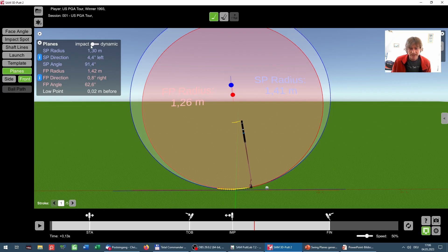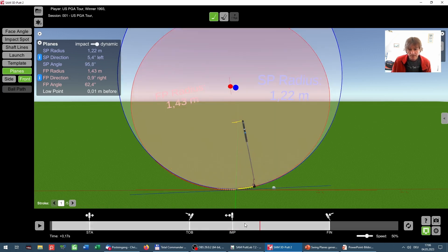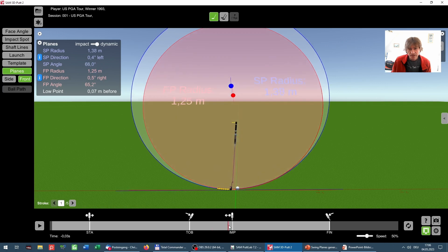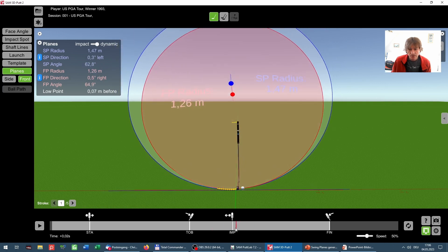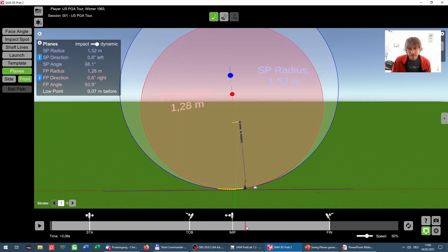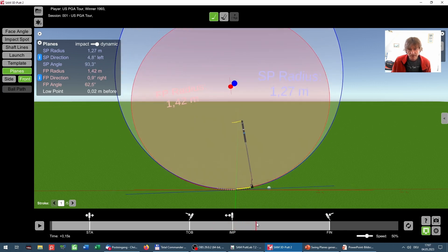In the static view all the data is relative to impact. Even if I scroll through the data with a slider the planes are stable because they only display the planes at impact. If I switch to dynamic mode the planes will change relative to the actual position of the putter while scrolling through the stroke.